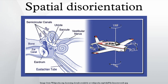Spatial disorientation can also affect instrument-rated pilots in certain conditions. A powerful tumbling sensation can be set up if the pilot moves his head too much during instrument flight. This is called the Coriolis illusion. Pilots are also susceptible to spatial disorientation during night flight over featureless terrain.